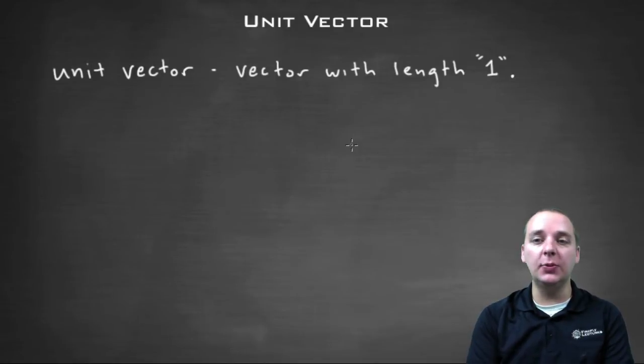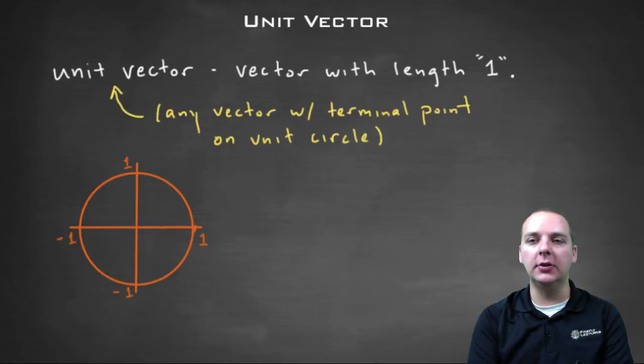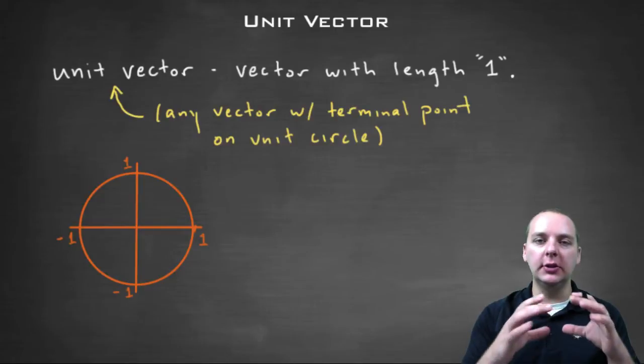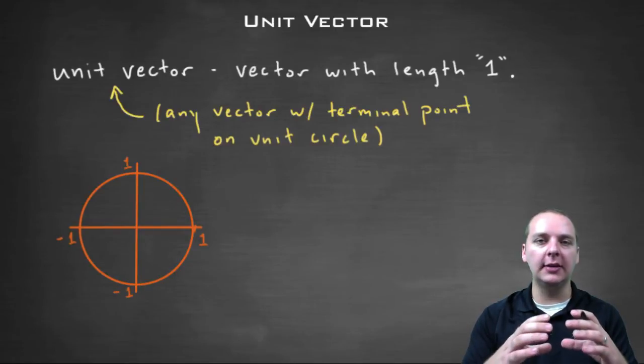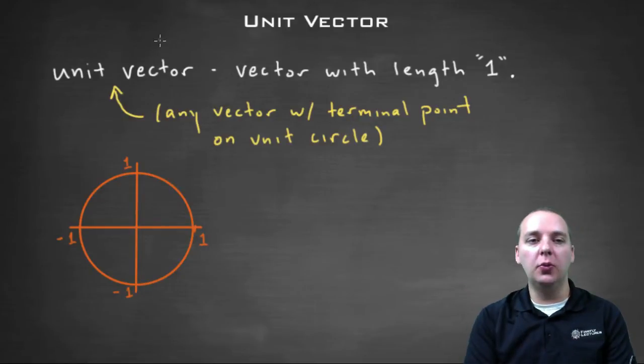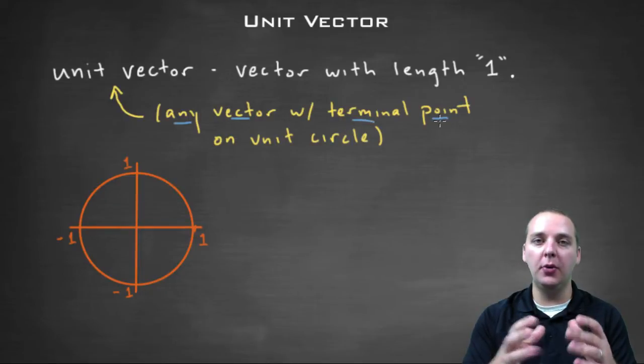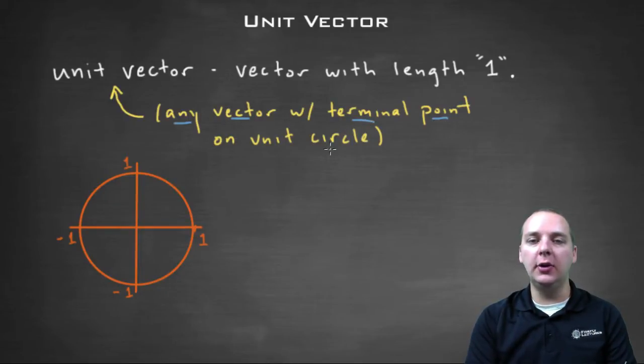There's a nice way to think about unit vectors: think in terms of the unit circle. You'll remember that from your trig class. The unit circle is a circle with radius one. So really, a unit vector is any vector that has this terminal point, when you write it in component form, being on the unit circle.